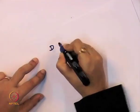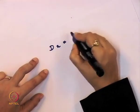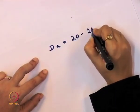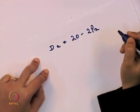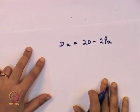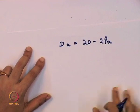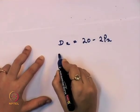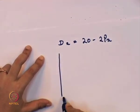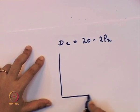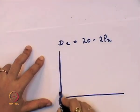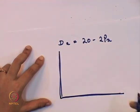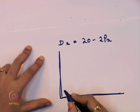Suppose we take the example of a linear demand function: dx = 20 − 2px. This is the demand function. Now, how do we find the demand curve from this demand function?